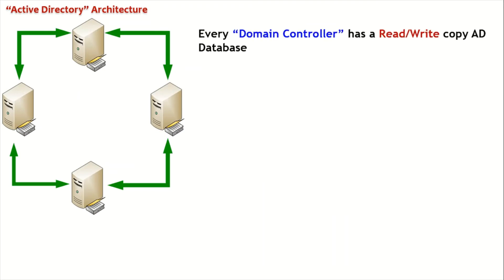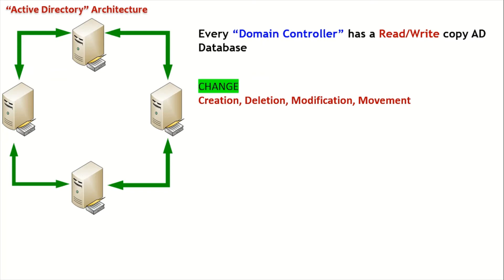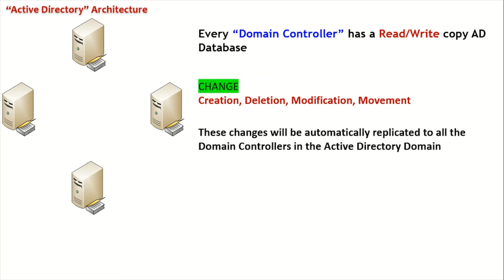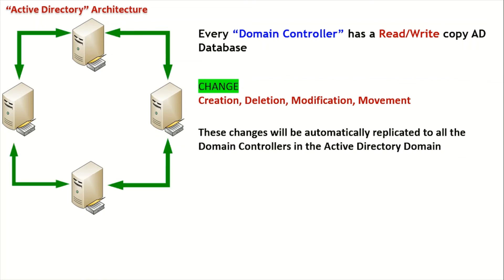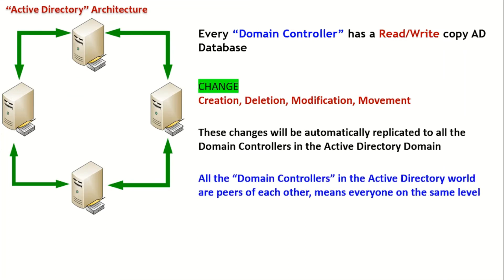Every domain controller has a read/write copy of the Active Directory database. As an administrator, we can make a change — creation, deletion, modification, or movement of an object — on any domain controller. These changes will then be automatically replicated to all the domain controllers in the domain. We can say that all domain controllers are peers of each other, meaning everyone is on the same level.